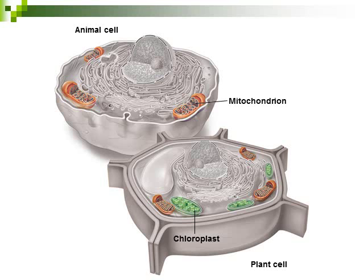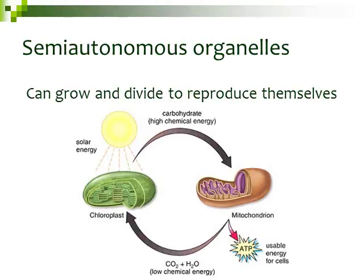We're going to be looking at mitochondria and the chloroplast. These energy-related organelles are also called semi-autonomous organelles. Semi-autonomous means that they're partially reliant on the cell that they're in, but they can also grow and divide and reproduce by themselves. They're very interesting organelles.